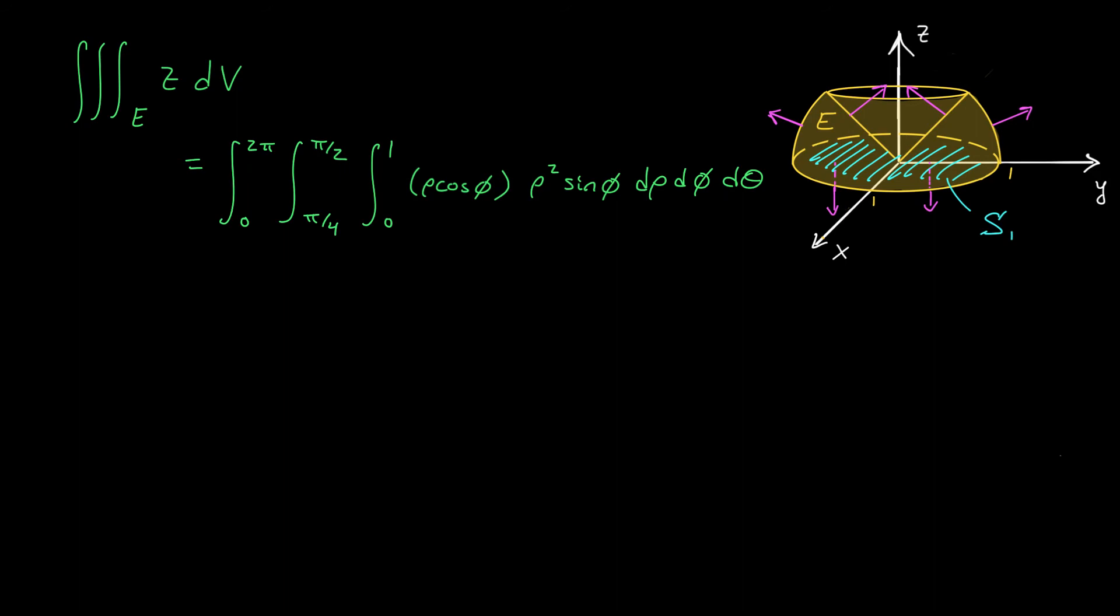Notice that everything splits up really nicely. We have the θ part, the integral from 0 to 2π dθ. We have the φ part, the integral from π over 4 to π over 2 of sin φ cos φ dφ. And we have the ρ part, the integral from 0 to 1 of ρ³ dρ.